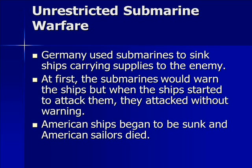The next reason why the United States begins to join is called unrestricted submarine warfare. Because the British had the best navy in the world, in order to get past the British, the Germans invented the submarine — they called them the U-boat, or undersea boat — and they would sink ships carrying supplies to the enemy. At first, submarines would warn the ships: they'd surface, send a message to get off, and then sink it. But when ships started to attack them, they began attacking without warning, shooting an underwater missile called a torpedo to blow up and sink the ship.